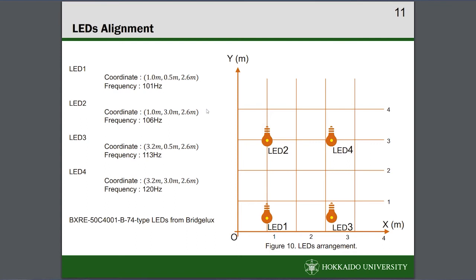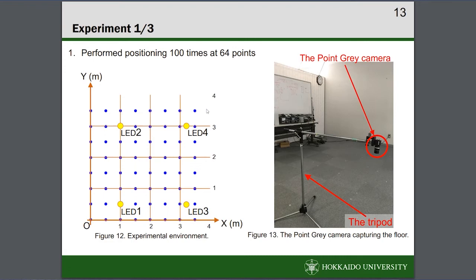This slide shows the arrangement of LEDs. This arrangement is the same as that of the fluorescent lamps originally installed in the building. Because the frame rate of the camera was 50Hz, respective frequencies were set to 101Hz, 106Hz, 113Hz, and 120Hz to cause the aliasing.